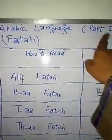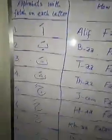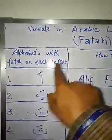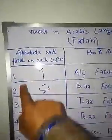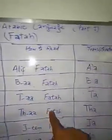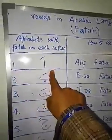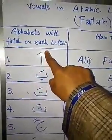In Arabic language, the first vowel is Fatah and its practice is called Shabba. Here we have alphabets with Fatah on each letter — how to read and transliteration. This is our first alphabet, Alif, and it has a short diagonal stroke on it — that is Alif Fatah.